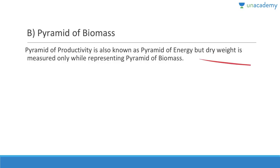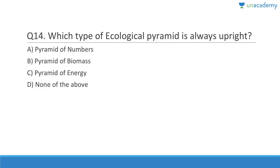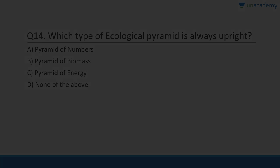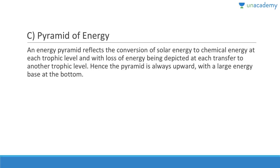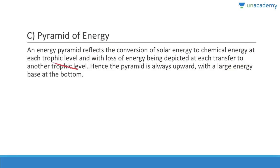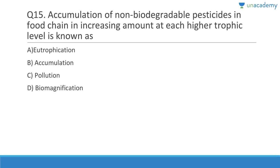Question 14: Which type of ecological pyramid is always upright? The answer is pyramid of energy, because of the 10% law. Energy will always reduce from one trophic level to another. An energy pyramid reflects the conversion of solar energy to chemical energy at each trophic level, with loss of energy at each transfer. Hence the pyramid is always upright with a large energy base at the bottom.